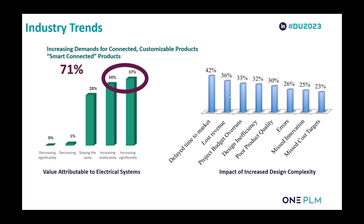So what does this mean? The implication of this trend is that we're seeing companies having delayed time to market, errors, missed cost targets — all things you see on the right hand side. This is due to the added complexity being driven by these trends.